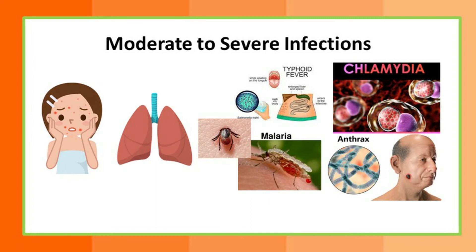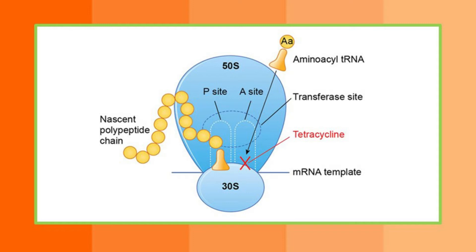Tetracyclines are used to treat conditions such as moderate to severe acne, lower respiratory tract infections, COPD exacerbations, and pneumonia — both atypical and typical. Other indications include chlamydia, typhoid, anthrax, and Lyme disease. Tetracyclines are also used in malaria prophylaxis.